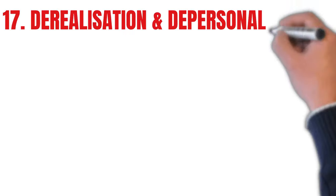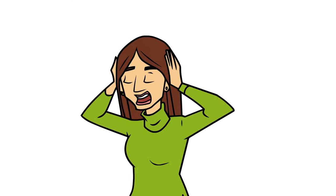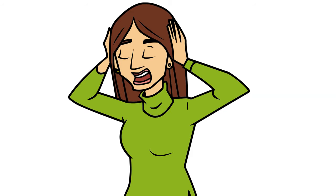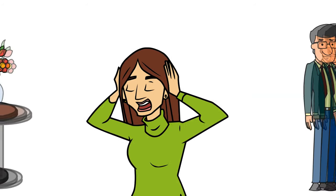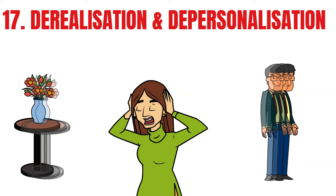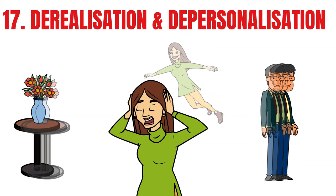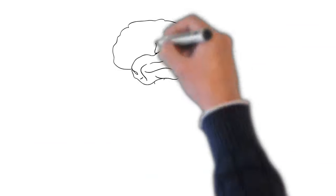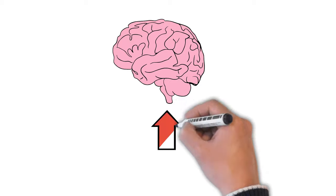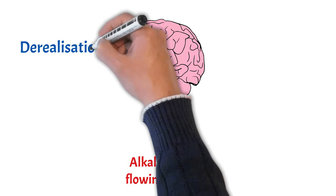Seventeen. Derealization or depersonalization. In derealization, you feel the world around is unreal. People and things around you may seem lifeless or foggy. With depersonalization, you feel disconnected from yourself. This is mainly caused by hyperventilation, and the effect of alkaline blood that I mentioned earlier. Only this time it affects your brain, causing these strange sensations.